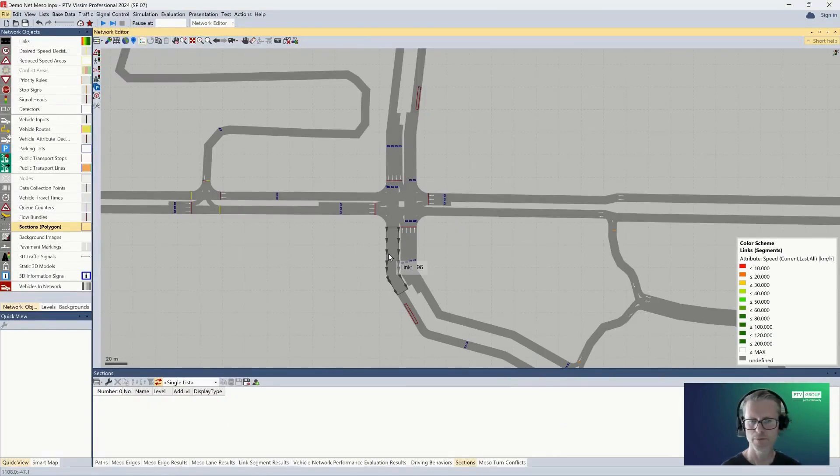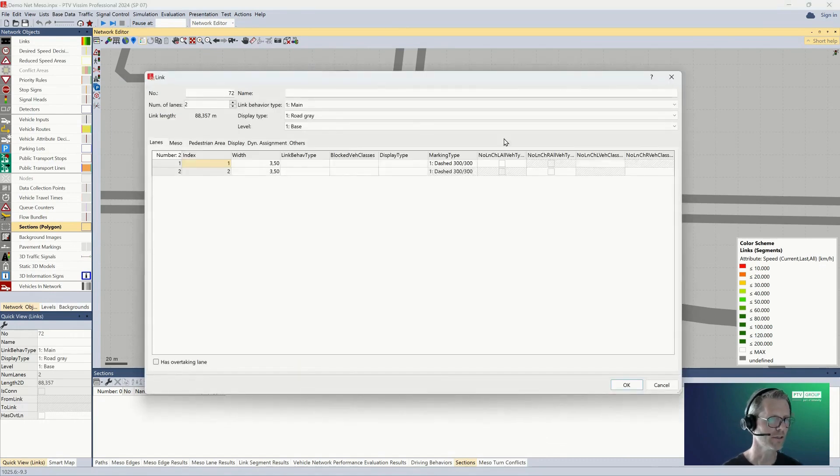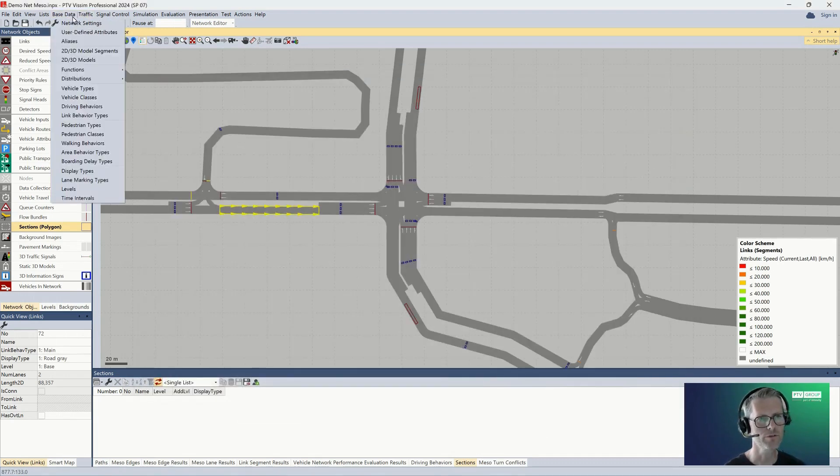Let's switch to VISSIM again. When I select the link in my model and I double-click it, it opens the dialog for the link. Here in this dialog you can find the tab meso, and here is the place where you can find the value for meso follow-up gap.